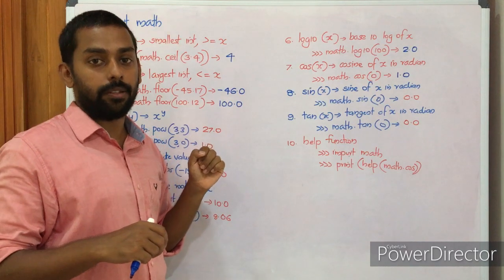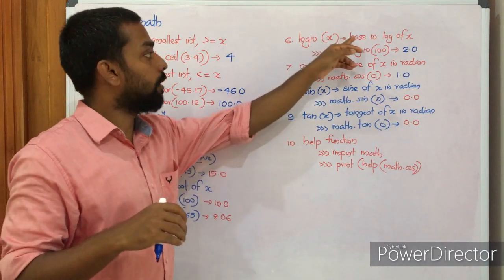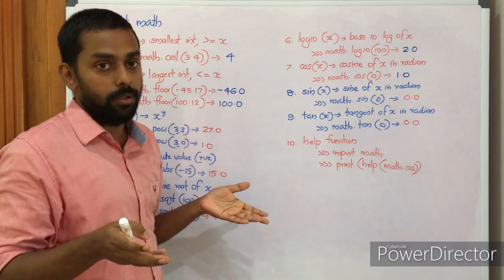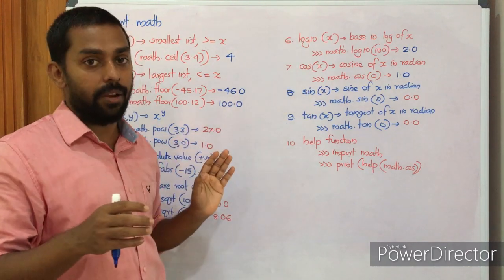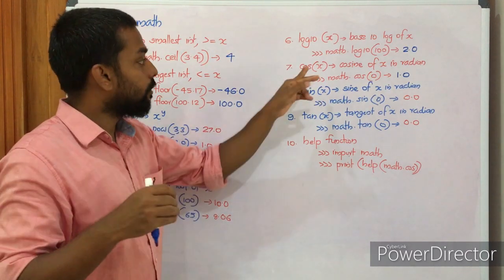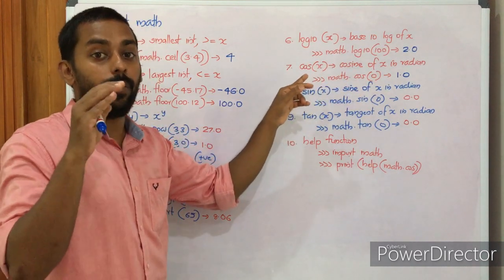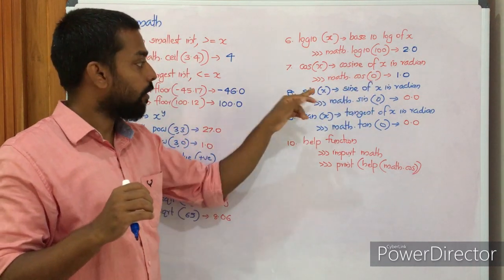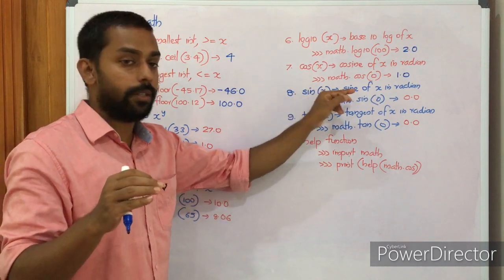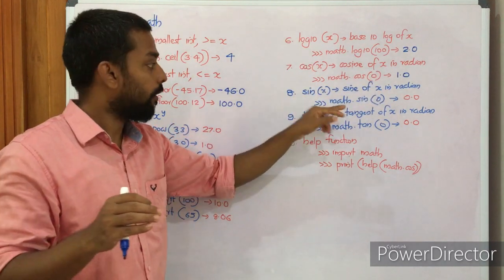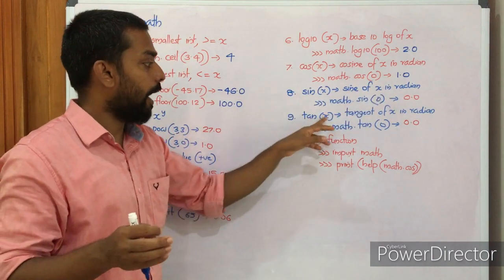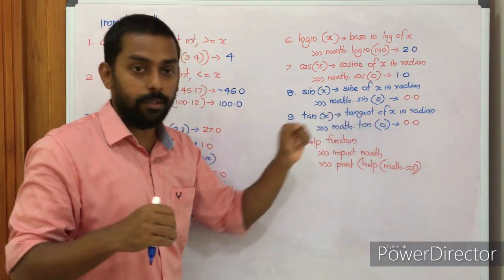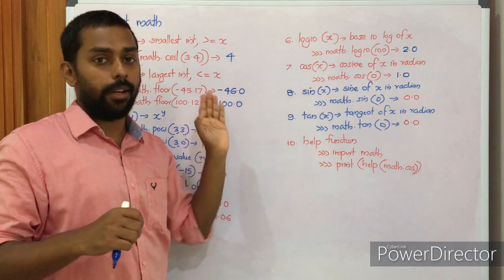Then we have log10(x), which returns the base 10 log of x. For example, math.log10(100) returns 2.0. Then we have the trigonometric functions: cos(x) returns the cosine value of x in radian — for example, math.cos(0) returns 1.0. Similarly, sin(x) returns the sine value of x in radian — math.sin(0.0). And tan(x) returns the tangent value of x in radian — math.tan(0) returns 0.0.